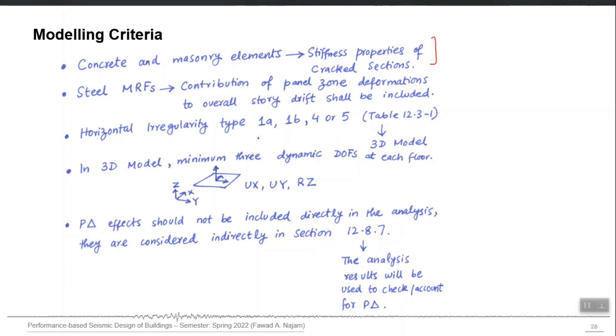If you have the horizontal irregularity type 1a, 1b, 4 or 5, which you up till now should have already established for your structure, then you must go for a three-dimensional computer model. The 2D simplification is not allowed in this particular case.